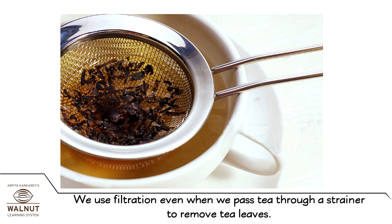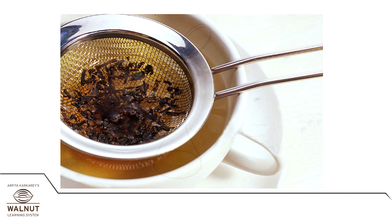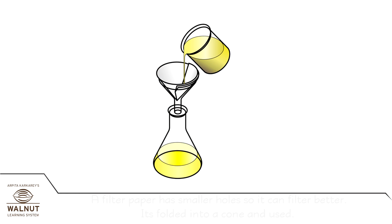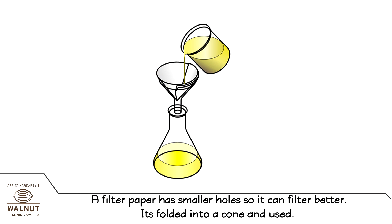We use filtration even when we pass tea through a strainer to remove tea leaves. A filter paper has smaller holes so it can filter better. It is folded into a cone and used.